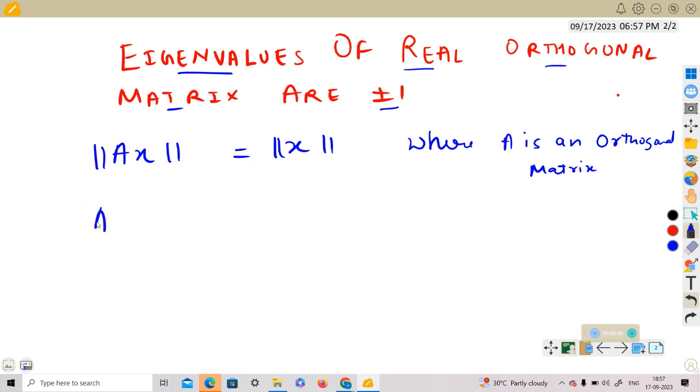First of all, consider ||Ax||². This is equal to <Ax, Ax>, the inner product, and this is equal to <x, A^T Ax>.